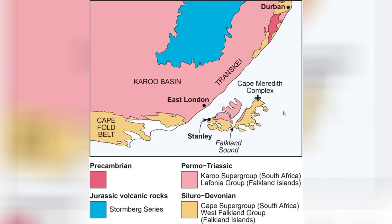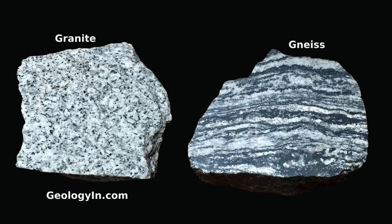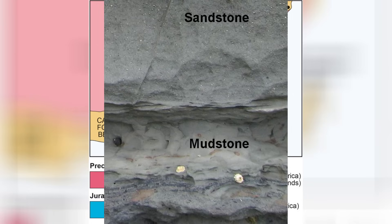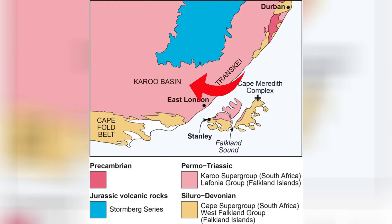There are a few primary ways we know the Falklands were connected to South Africa. One of the main reasons is the rocks found in both the Falklands and South Africa. The oldest rocks on the Falklands are known as the Cape Meredith Complex, found on the southernmost point of West Falkland, and they are comprised of gneiss and granite that resemble the Natal Metamorphic Province near Durban. We also have the West Falkland Group, primarily comprised of quartzite that matches the Cape Supergroup of South Africa. Finally, the Laphonia Group, primarily comprised of mudstones and sandstones, matches the Karoo Basin of South Africa. So all of the rocks on the Falklands point to an African connection.